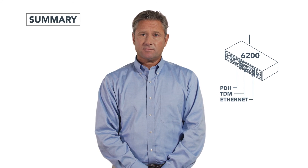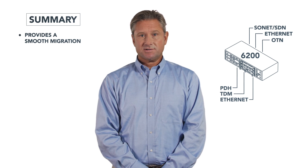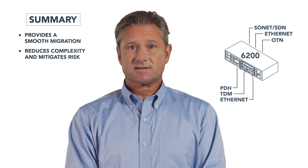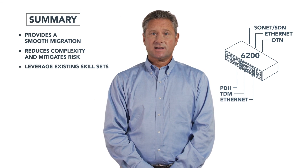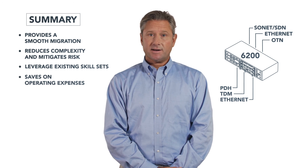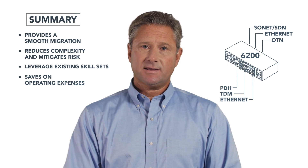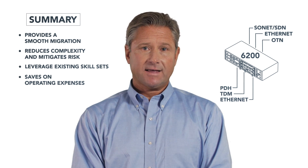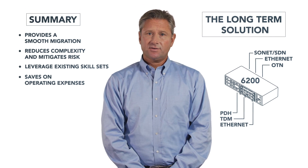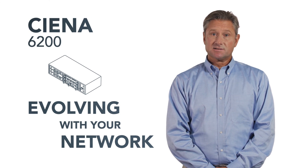In conclusion, the 6200 platform can help a utility provide a smooth migration from legacy Sonnet infrastructure to a next-generation platform. This migration option reduces complexity and mitigates risk. The 6200 will leverage existing skill sets and ease the learning curve on operational support. This incremental approach will save on operating expense. By deploying a smooth migration path and leveraging existing Sonnet skill sets, this will enable a utility to take the time to evaluate, test, and deploy new OT network technologies. Finally, the 6200 solves immediate utility needs by offering a long-term solution. And that's how Ciena makes network transformation possible for utilities.